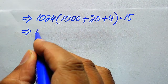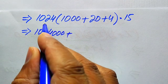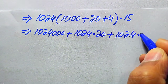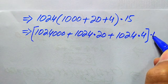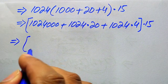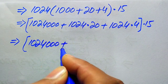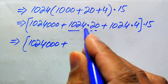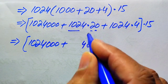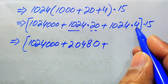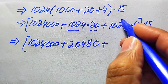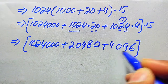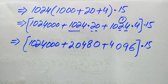Multiplying 1024 by 1000 gives 1,024,000. Multiplying 1024 by 20: we get 20,480. Multiplying 1024 by 4: 4 times 4 is 16, write 6 carry 1; 4 times 2 is 8 plus 1 is 9; 4 times 0 is 0; 4 times 1 is 4, giving 4,096. We sum these three values: 1,024,000 plus 20,480 plus 4,096, and the result is multiplied by 15.